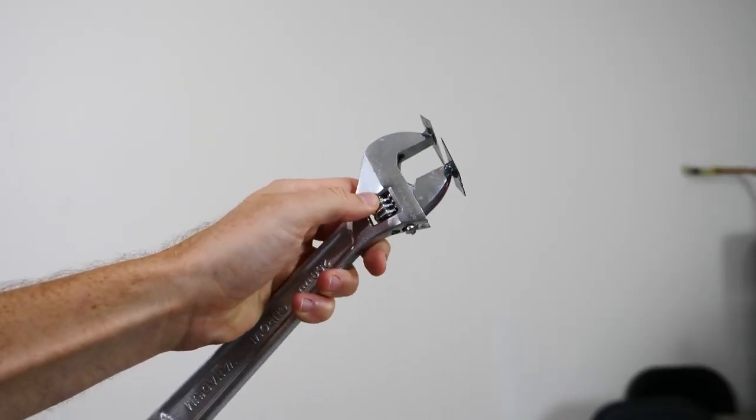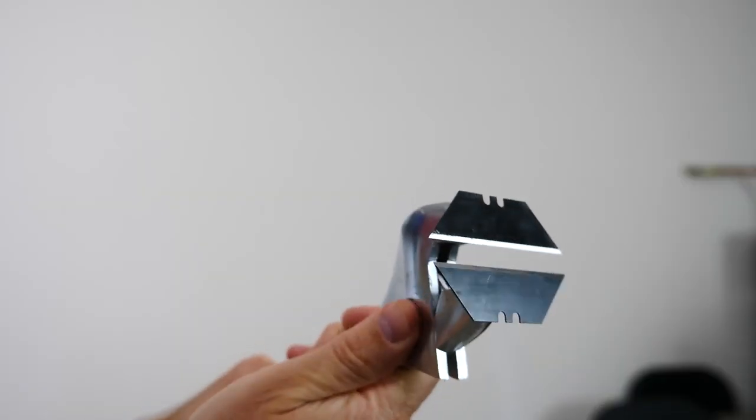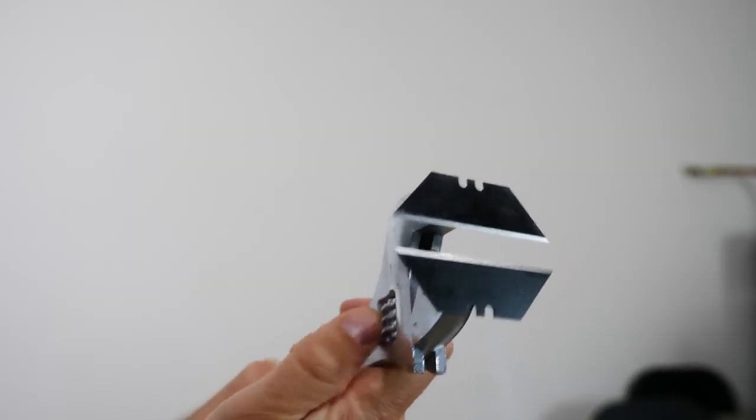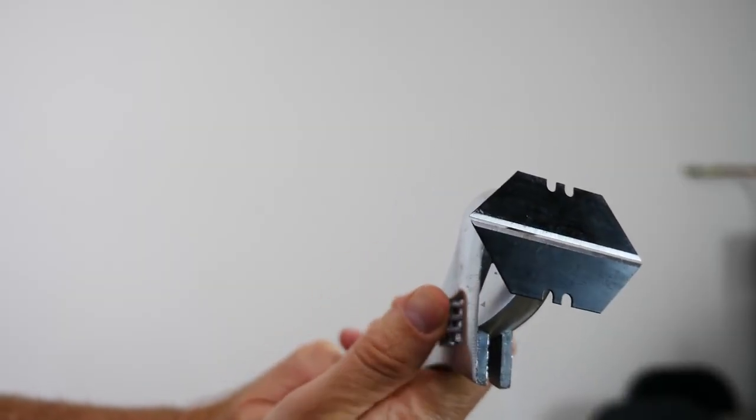What I have here is two razor blades connected to a crescent wrench. So you can see that I can make this gap further apart or closer together just by opening and closing my wrench here.